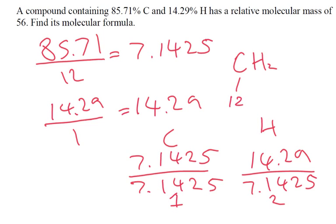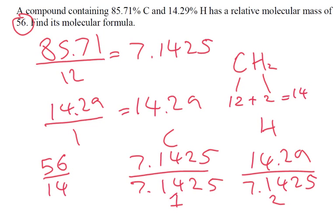CH2 has mass 12 plus 2 = 14. We're told the molecular mass is 56. So how many times does the empirical formula mass go into the molecular mass? 56 divided by 14 is 4. So our final molecular formula is C4H8.